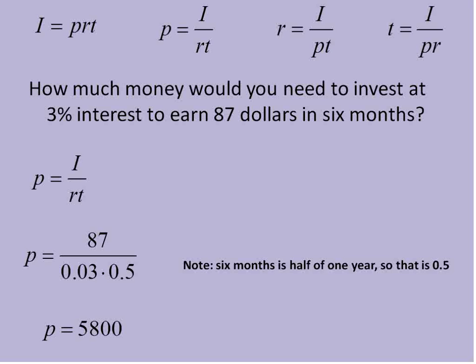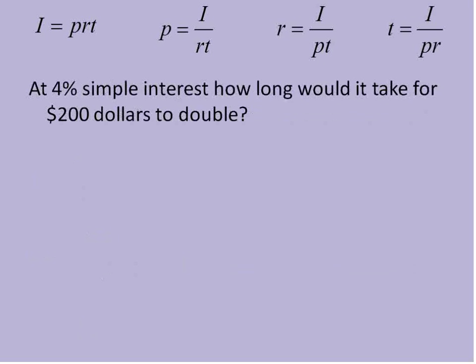87 divided by 0.03 times 0.5 will give us 5,800. So you would need to invest $5,800 at 3% interest to earn $87 in six months.